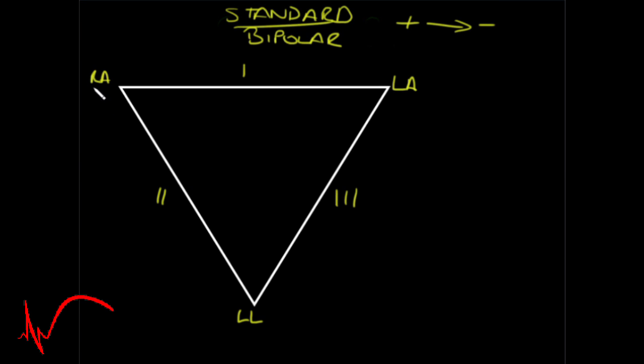Lead one is a combination of a negative pole at the right arm and a positive one at the left arm. Lead three is a negative pole at the left arm and a positive one at the left leg.